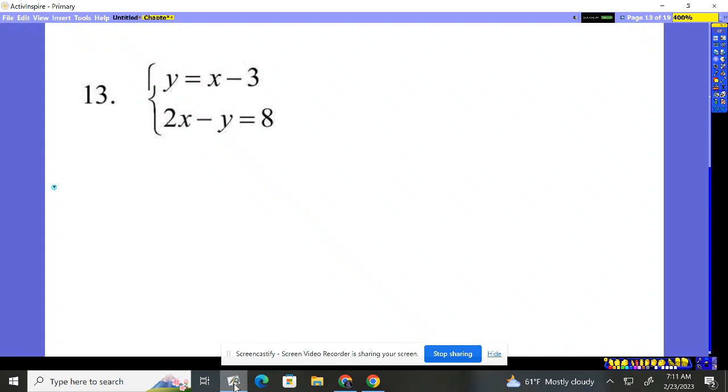Problem 13 is a system of equations that starts off with y equals x minus 3. That means substitution right away. I'm going to substitute that in wherever there's a y below. The y is right there, so 2x minus y, where y is x minus 3.